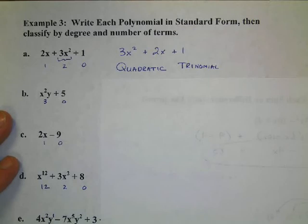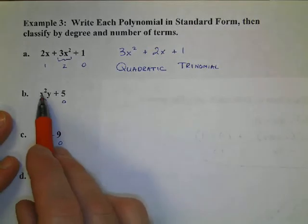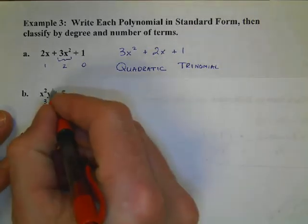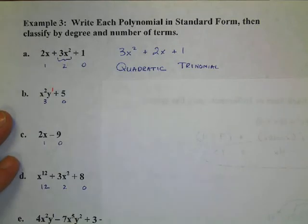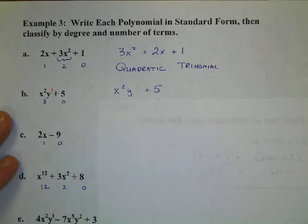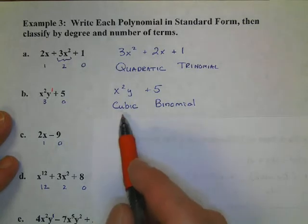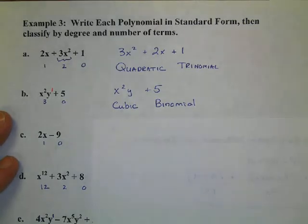Now, let's look at the second one. We have x squared y. Remember, y has an exponent of 1, so that degree is 3, and the 5 is a degree of 0. So, our degree is 3. We write it in the correct order. x squared y plus 5, the same thing. That's called a cubic binomial. Cubic because the degree is 3. Binomial because it is a two-term problem.